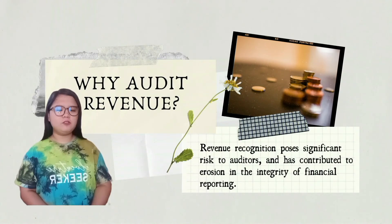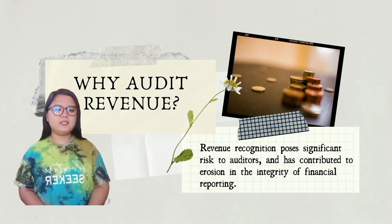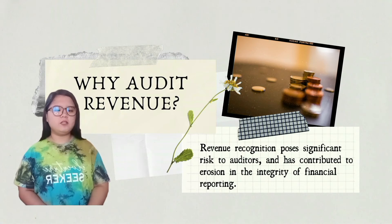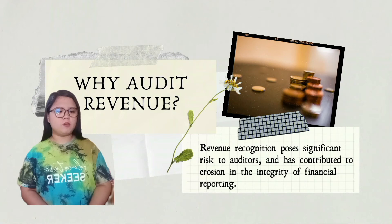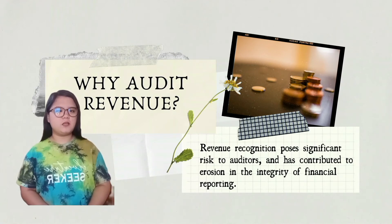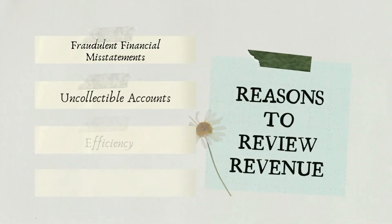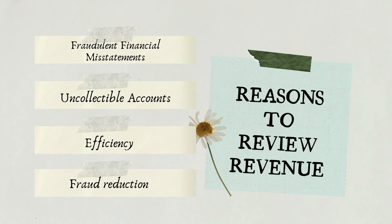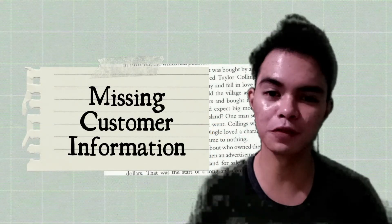Why audit revenue? Revenue recognition poses significant risks for auditors and has contributed to erosion within financial reporting. In recent years, several high-profile incidents of improper revenue recognition attracted the attention of business media. Therefore, accounts receivable and revenue streams are arguably the most risky part of financial statements. Here are four major reasons to review revenue: financial statement accuracy, collectible accounts, conditions, fraud reduction, and missing customer information. We need to analyze the customer table to see if there is missing information.